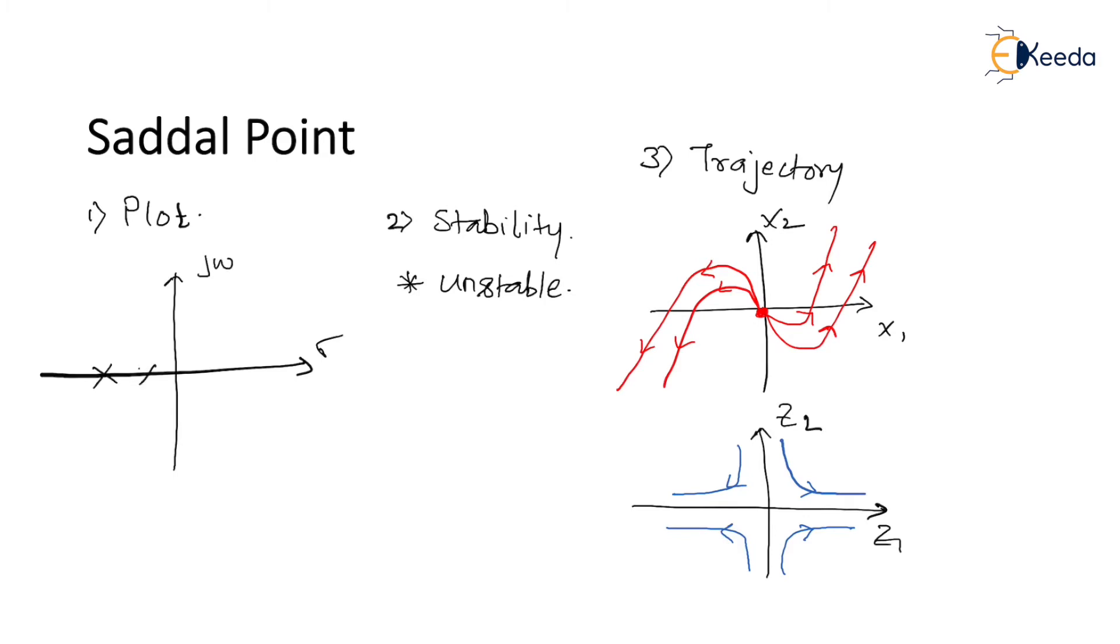In this case, few poles are on the LHS of the S plane and few poles are on the RHS of the S plane. Let us mark this as λ1, λ2, λ3, and λ4. So this is the pole plot of a saddle point.